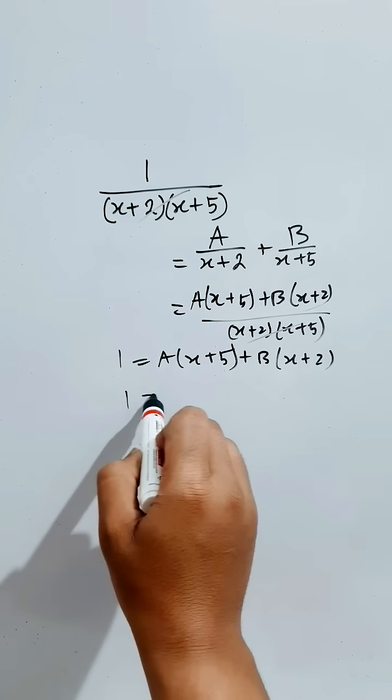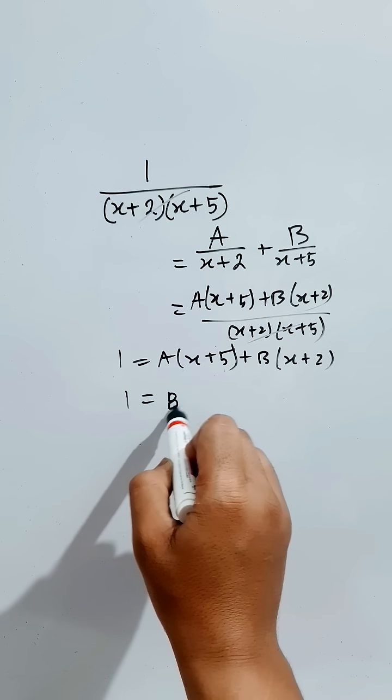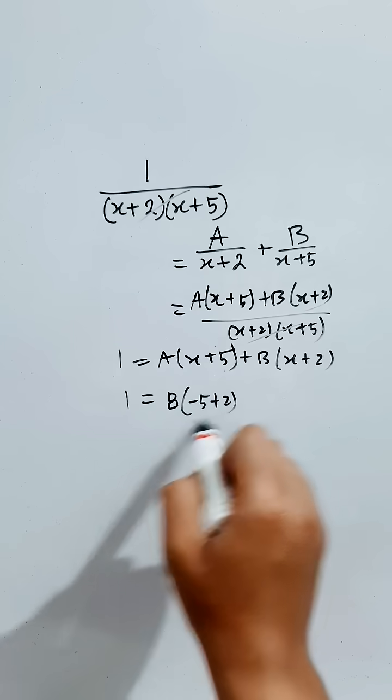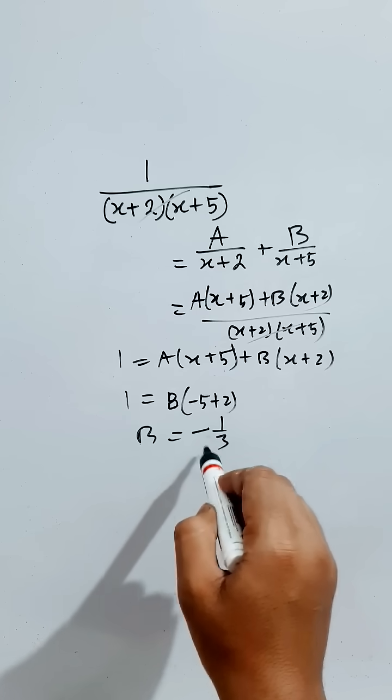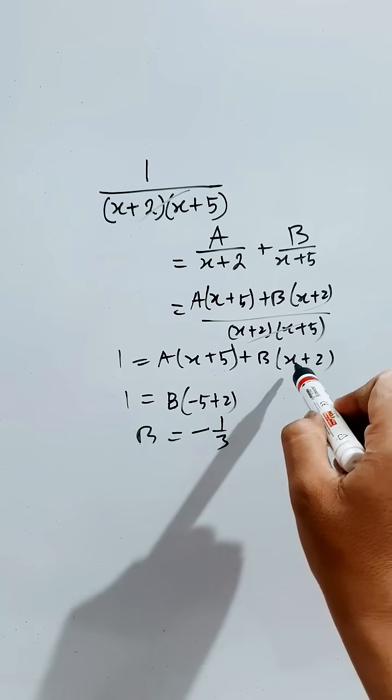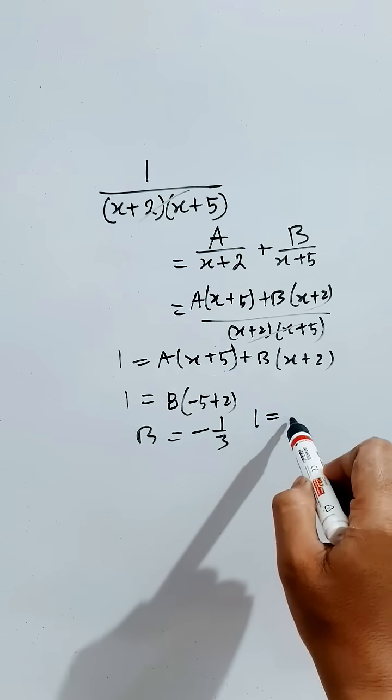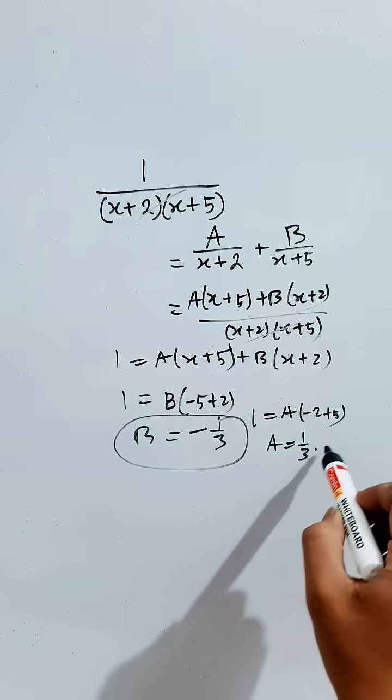That is, B will be equals to minus 1 by 3. Now if you will put x equals to minus 2, then you will get the value of A. That is, B is equals to minus 1 by 3, A is equals to...